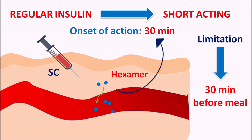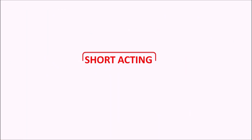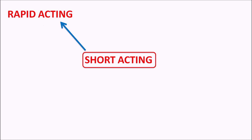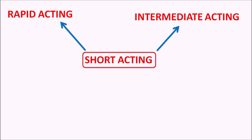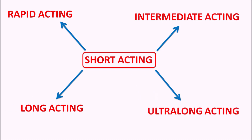Because of this delay, regular insulin must be given 30 minutes before a meal for better therapeutic action, which reduces patient compliance since that is not always practically possible. When given just before a meal, it may not adequately control postprandial glucose. To minimize this limitation, rapid-acting, intermediate-acting, long-acting, and ultra-long-acting insulin preparations have been developed.